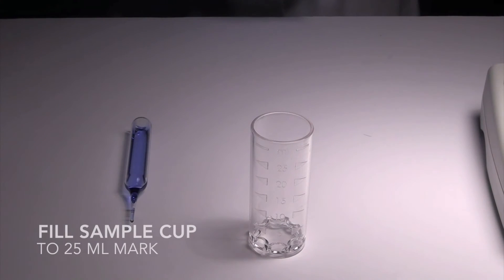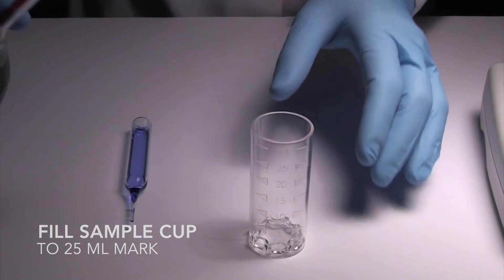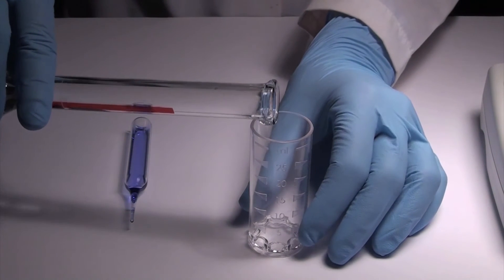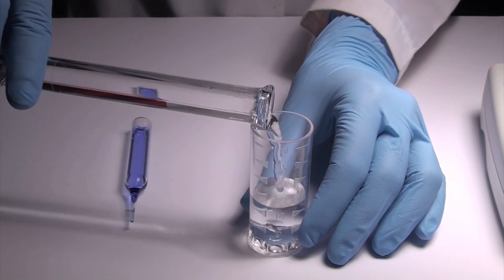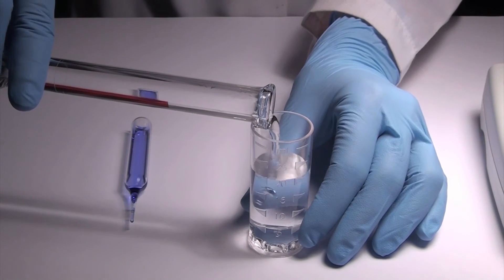Then, measure the ozone in the sample. Fill the sample cup to the 25ml mark with the sample to be tested, being careful to minimize turbulence. Ozone loss from sample occurs rapidly, so do not transfer sample to other containers.